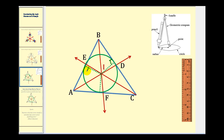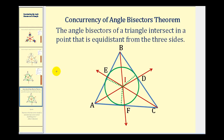These three distances are all the same, and because of that we can inscribe a circle — construct a circle that fits nicely inside the triangle. The concurrency of angle bisectors theorem tells us that the angle bisectors of a triangle intersect in a point that is equidistant from the three sides, as we just stated. I hope you found this helpful.